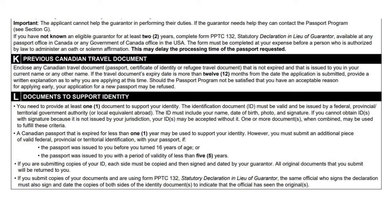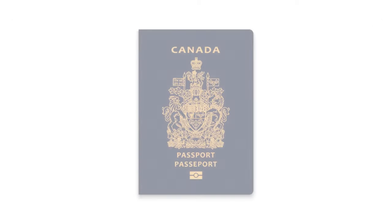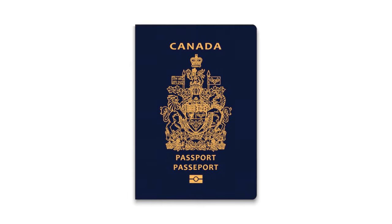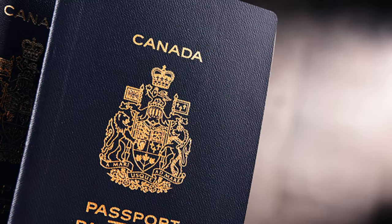Valid ID includes name, date of birth, photo, and signature. It must be issued by a federal, provincial, territorial, or state government or authority, or equivalent abroad. You can submit a copy of your ID — if you do so, you need to copy both sides of the document. Your guarantor must sign and date on each side of the document. You can also use a Canadian passport as your ID if it was valid for four years or more when you first got it, and it is still valid or expired for one year or less.